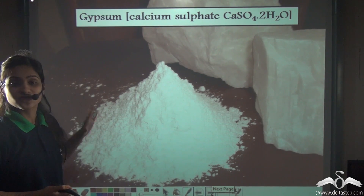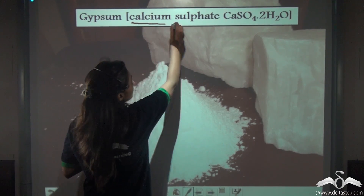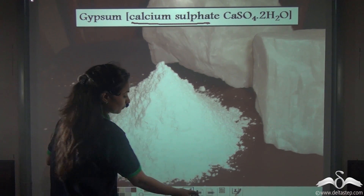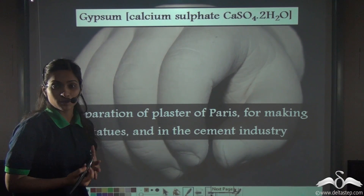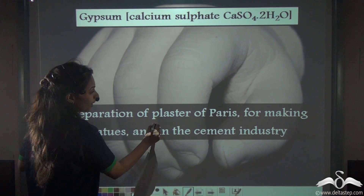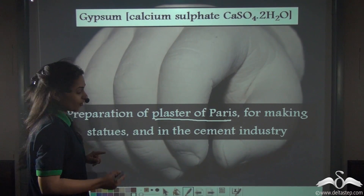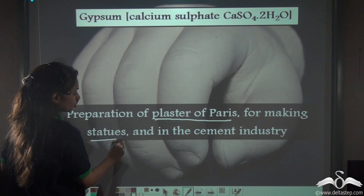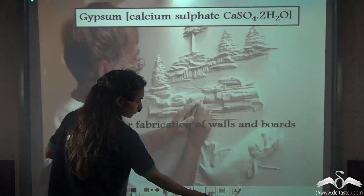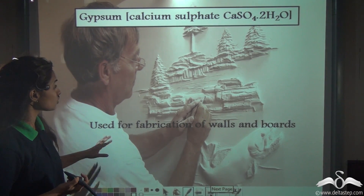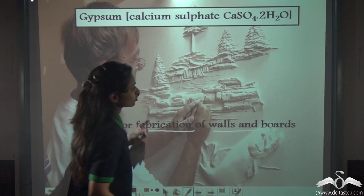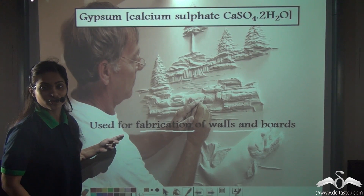Next we have gypsum, which is calcium sulphate — CaSO4.2H2O. Gypsum is used in the preparation of plaster of Paris, for making statues, and in the cement industry. Gypsum is also used for fabrication of walls and boards.